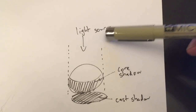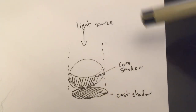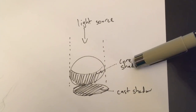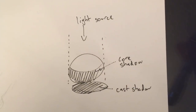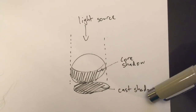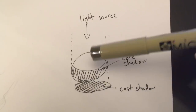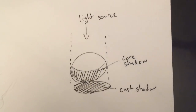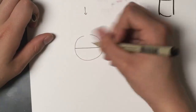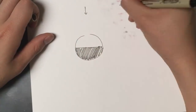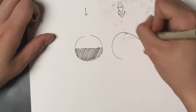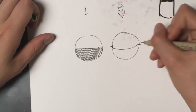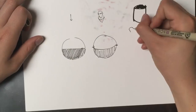I'm gonna start out by showing you how to shadow basic shapes. Here's a sphere. There are two shadows: core shadows and cast shadows. These are the two main shadows you need to know in order to light your figures. Over here I'm gonna draw a few spheres and show you how to light them. There are different types of light sources.